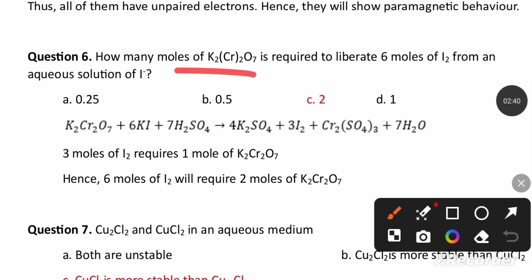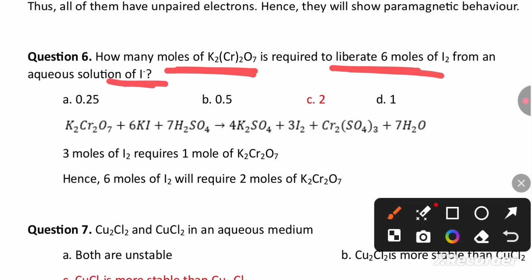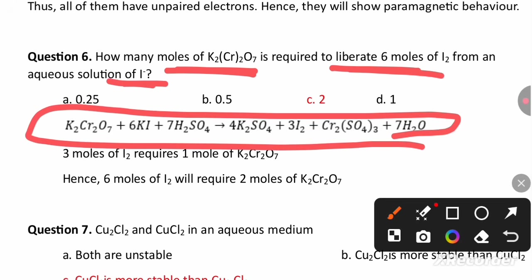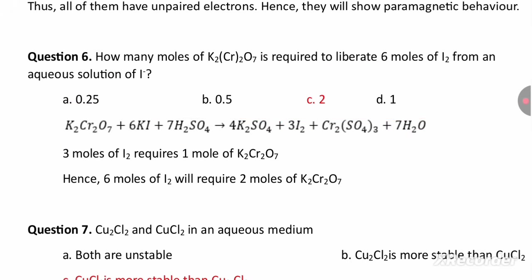How many moles of potassium dichromate are required to liberate 6 moles of iodine from an aqueous solution of iodide ion? As the equation shows, 1 mole of potassium dichromate reacting with potassium iodide liberates 3 moles of iodine. So to liberate 6 moles of iodine, there must be 2 moles of potassium dichromate. The answer is 2.